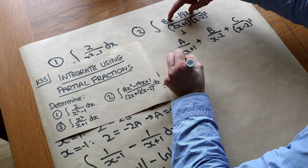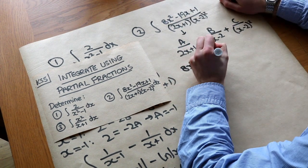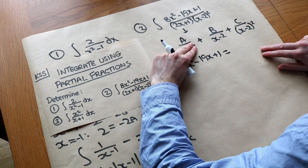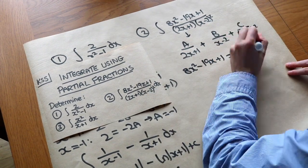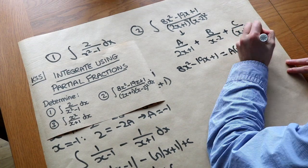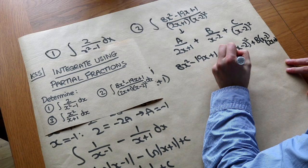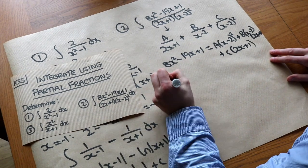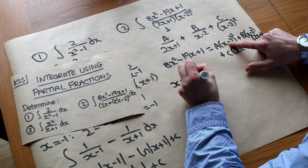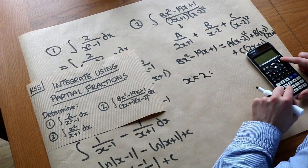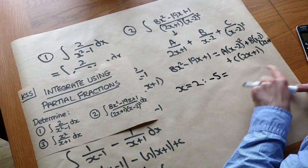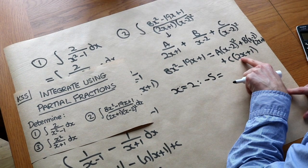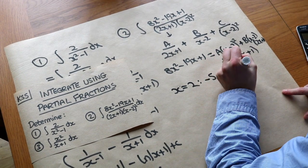Multiplying through gives 8x²-19x+1 on the top. Multiplying the A term by the denominator leaves A(x-2)². The B term becomes B(x-2)(2x+1), and the C term becomes C(2x+1). Substituting x=2 into the left-hand side using a calculator gives -5. Substituting x=2 zeros out the A and B terms, leaving C(2×2+1) = 5C, so C = -1.